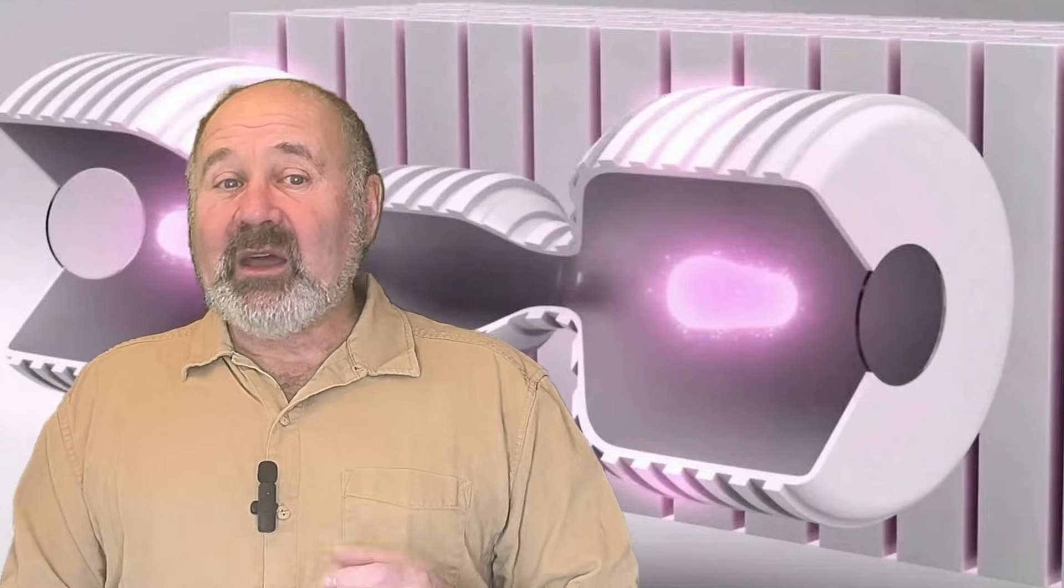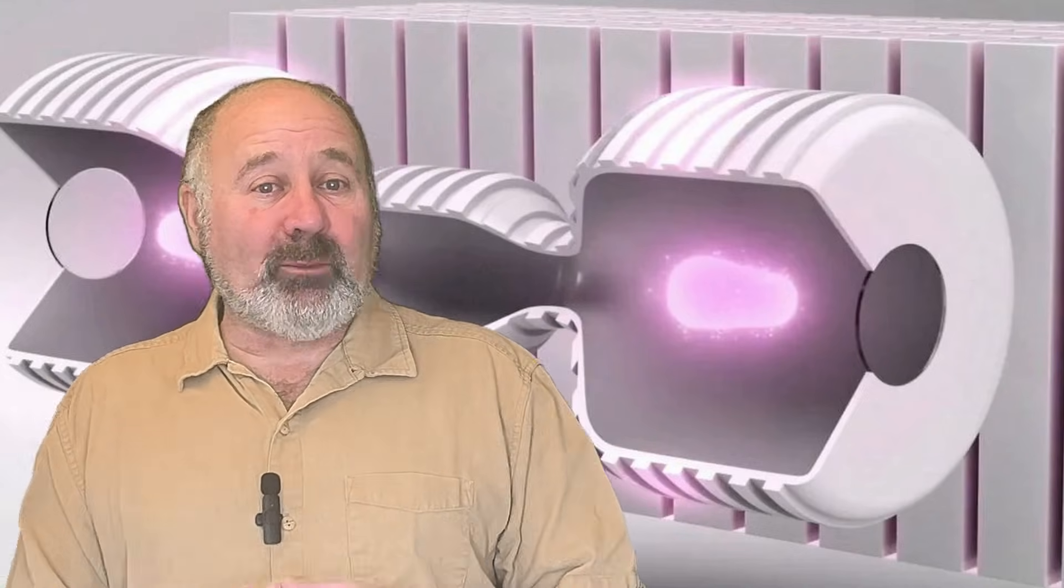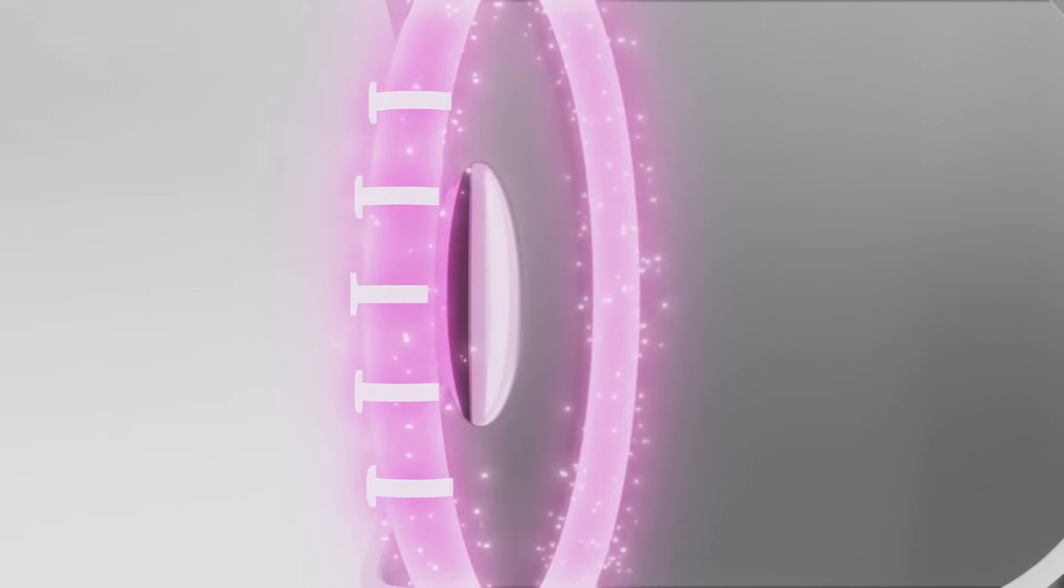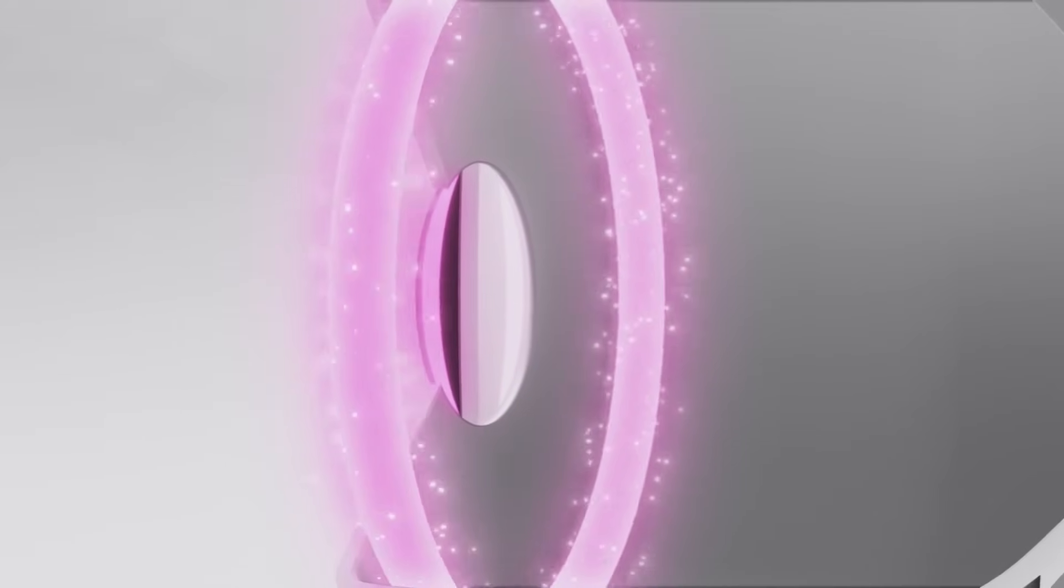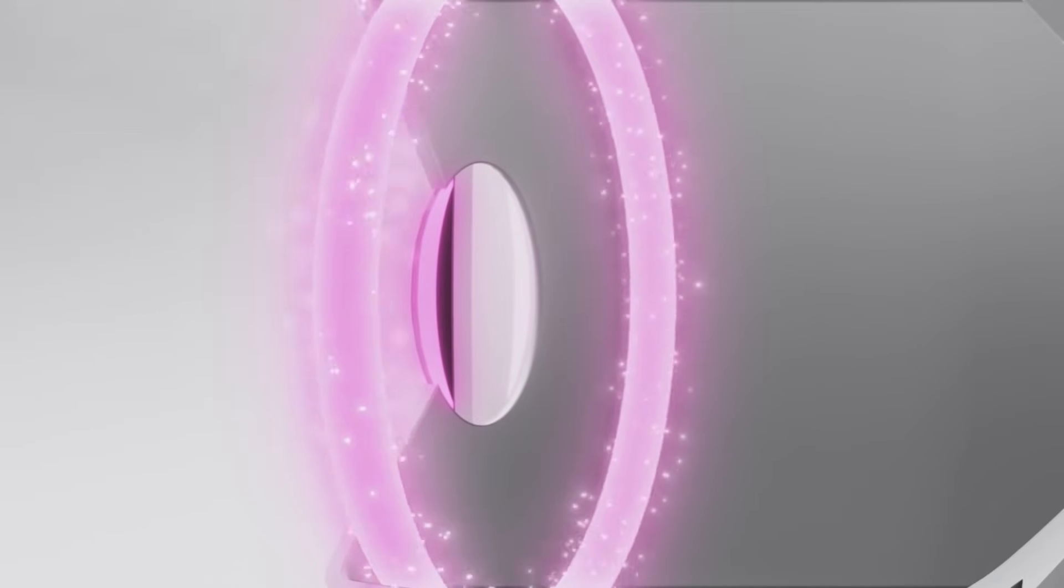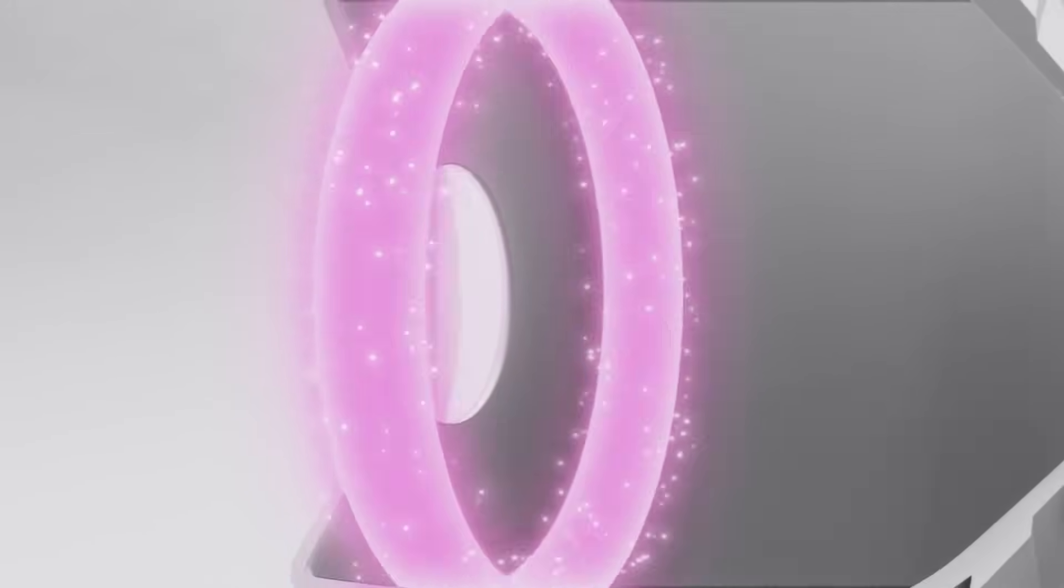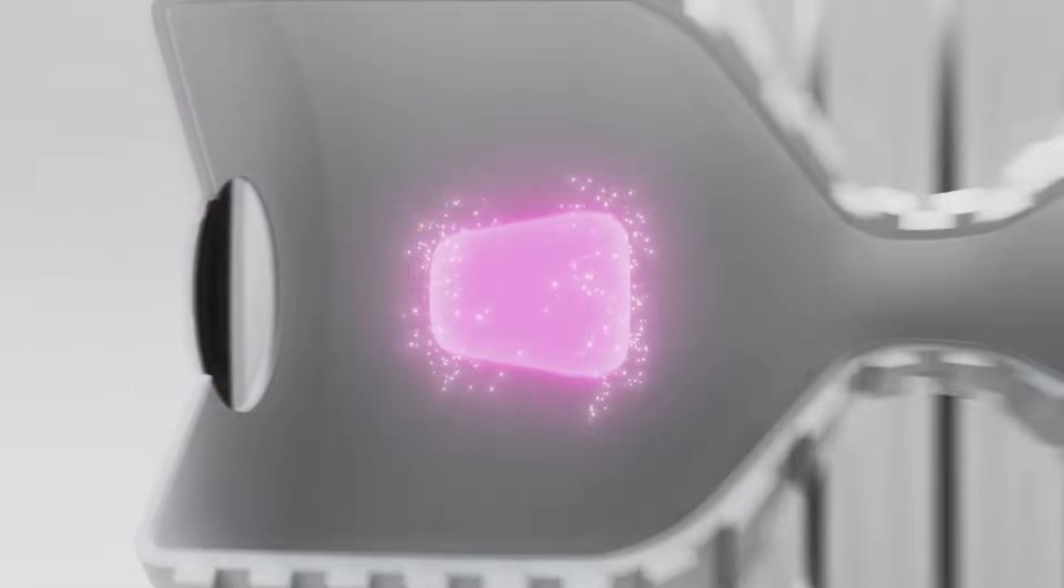On one side of the machine, they inject the fuel as a cool gas. Then they heat the gas enough that the particles of hydrogen and helium are ionized and the gas becomes a plasma. Then the magnetic fields start to do their magic, turning the plasma into a rotating ring, then pushing and squeezing this ring until it's moving at a million miles an hour.